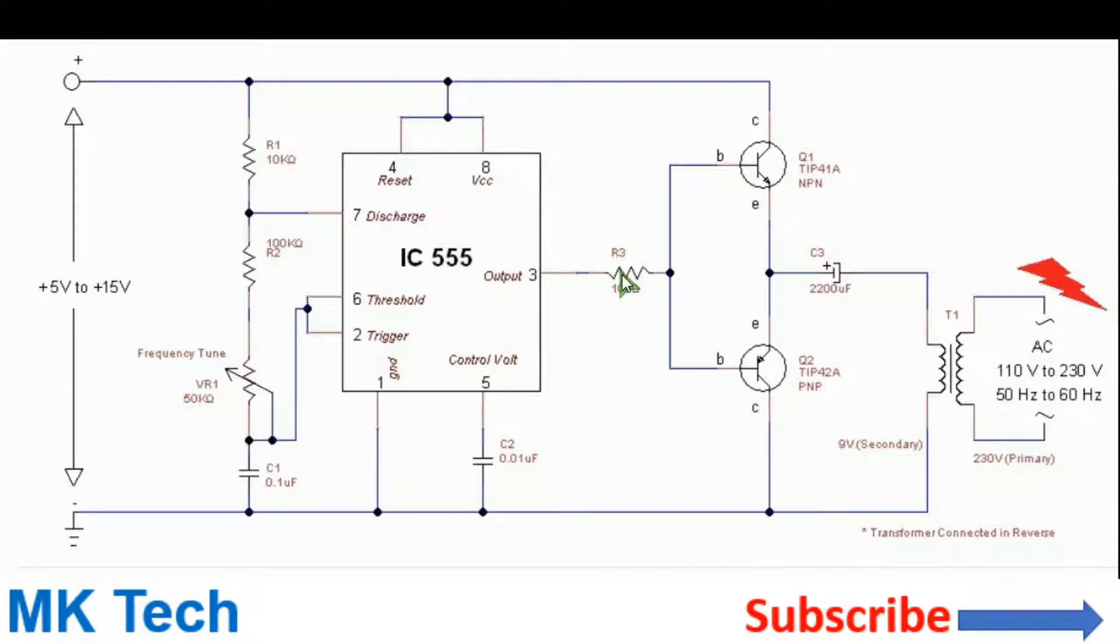When output pin 3 goes high, the NPN transistor will conduct, allowing current to flow through the Q1 NPN transistor, through the series capacitor, and through the primary winding to ground. That is the first half cycle.